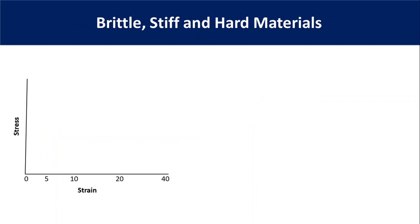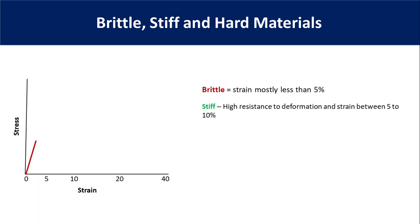Now let's talk about brittle, stiff and hard material. Brittleness, stiffness and hardness are properties related to a material's resistance to deformation, either in bulk or at the surface. Brittleness is the measure of elongation at break — typically a brittle polymer will show only elastic deformation and elongation at break will be mostly less than 5%. There is sometimes confusion between brittle and stiff material. Both show only elastic deformation, but a stiff material usually shows higher elongation at break than a brittle material.